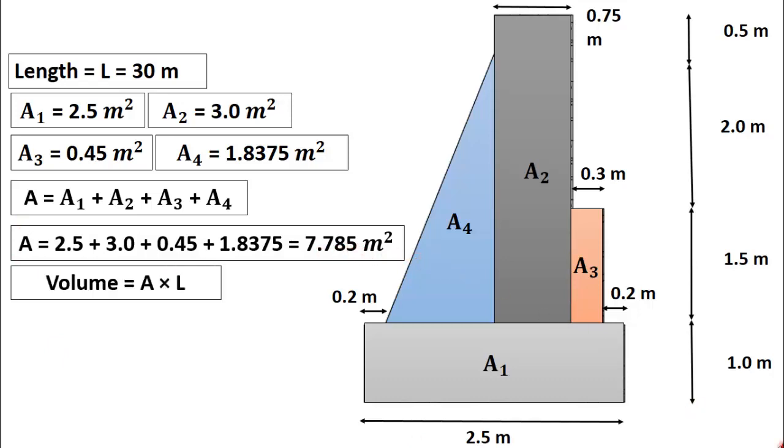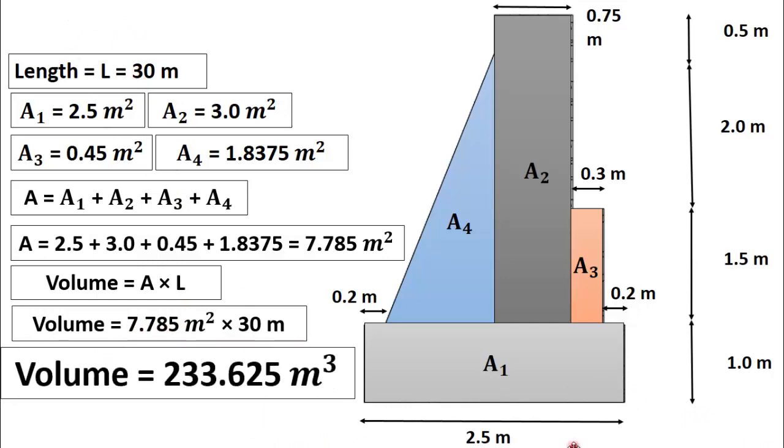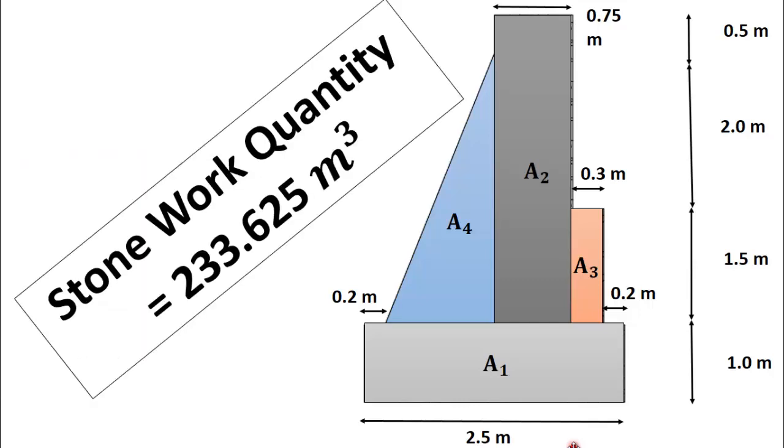Now to find the volume of retaining wall just multiply area with the given length. Area is 7.785 square meter and the given length is 30 meter. After simple calculation we will get the total volume is 233.625 cubic meter. So the total quantity of stone work required is 233.625 meter cube.